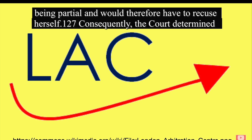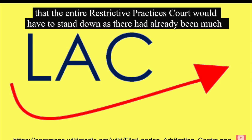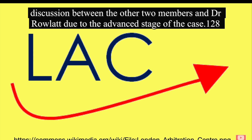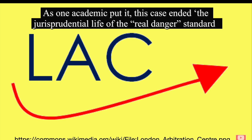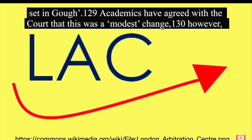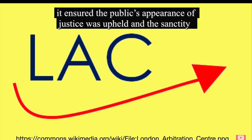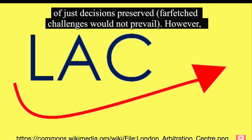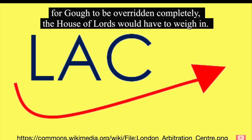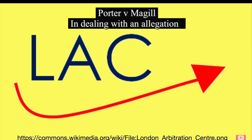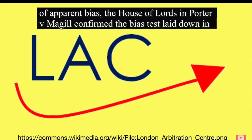The court found that real possibility and real danger were the same. The court further justified this test by stating that it was now reflective of the approach taken by most other Commonwealth countries. As a result, the Court of Appeal amended the test in Gough with respect to the bias test's first limb. It changed the perspective of the test to a reasonable person instead of the court, whilst supplementing real danger with real possibility. Having ascertained the correct test, the court concluded that a fair-minded observer would find that Dr Rowlett was in real danger of being partial and would therefore have to recuse herself. Consequently, the court determined that the entire Restrictive Practices Court would have to stand down as there had already been much discussion between the other two members and Dr Rowlett due to the advanced stage of the case. As one academic put it, this case ended the jurisprudential life of the real danger standard set in Gough.